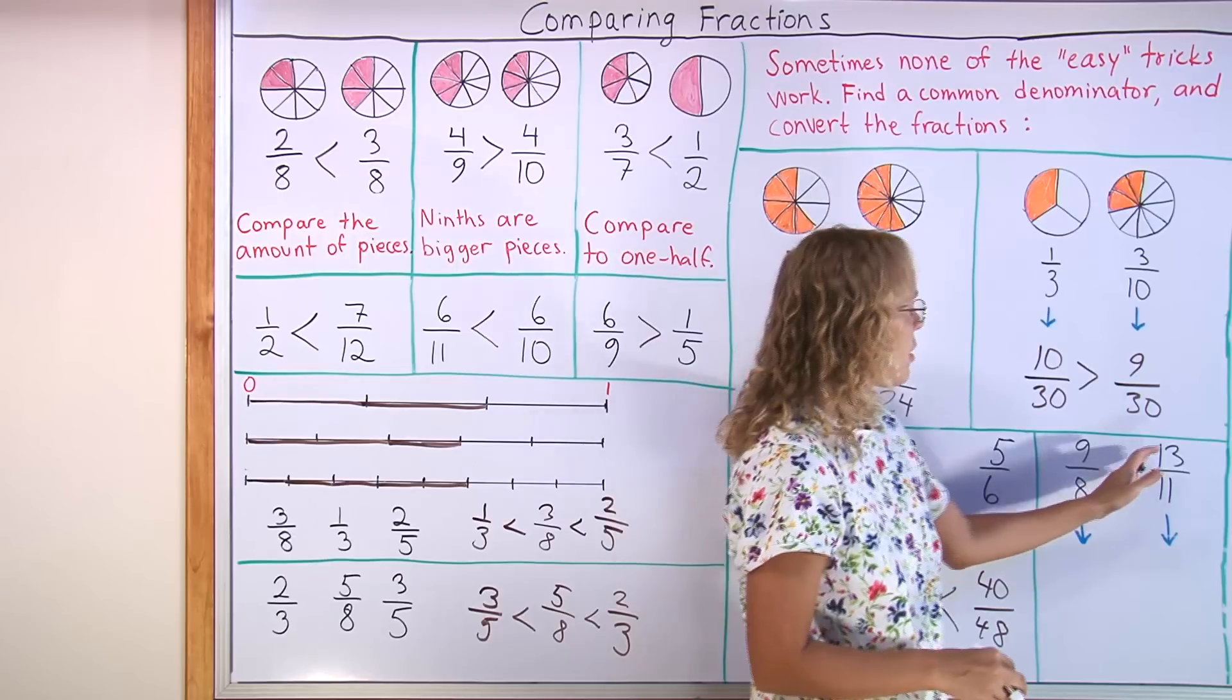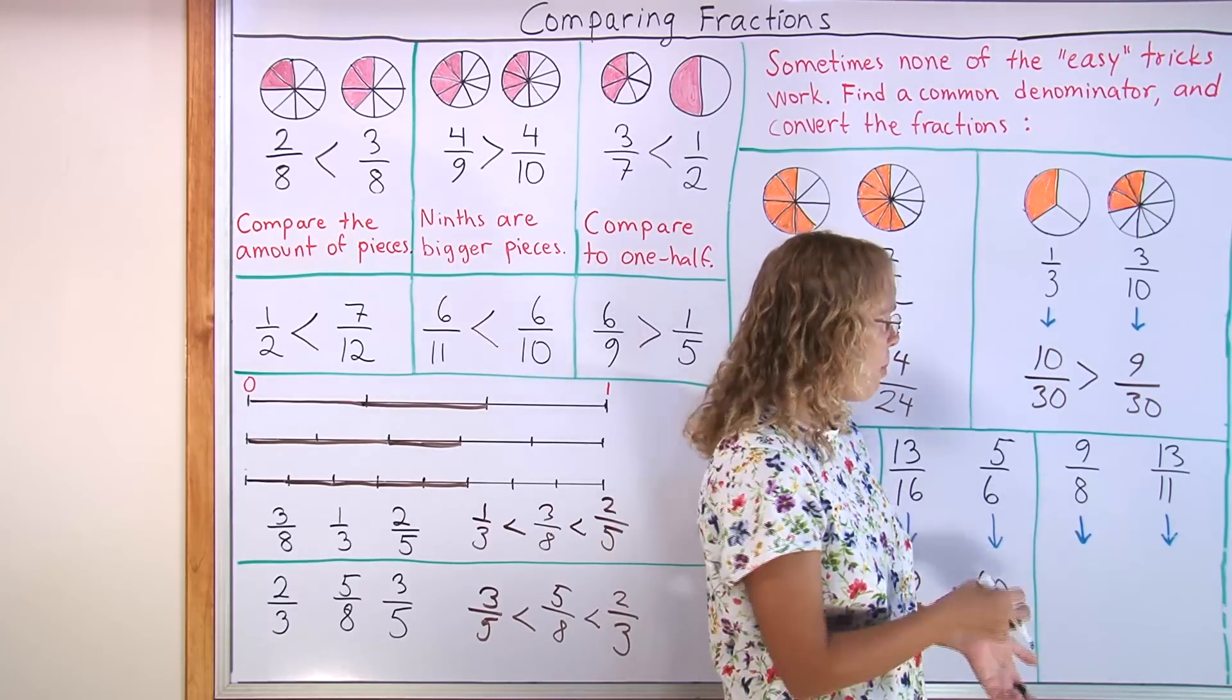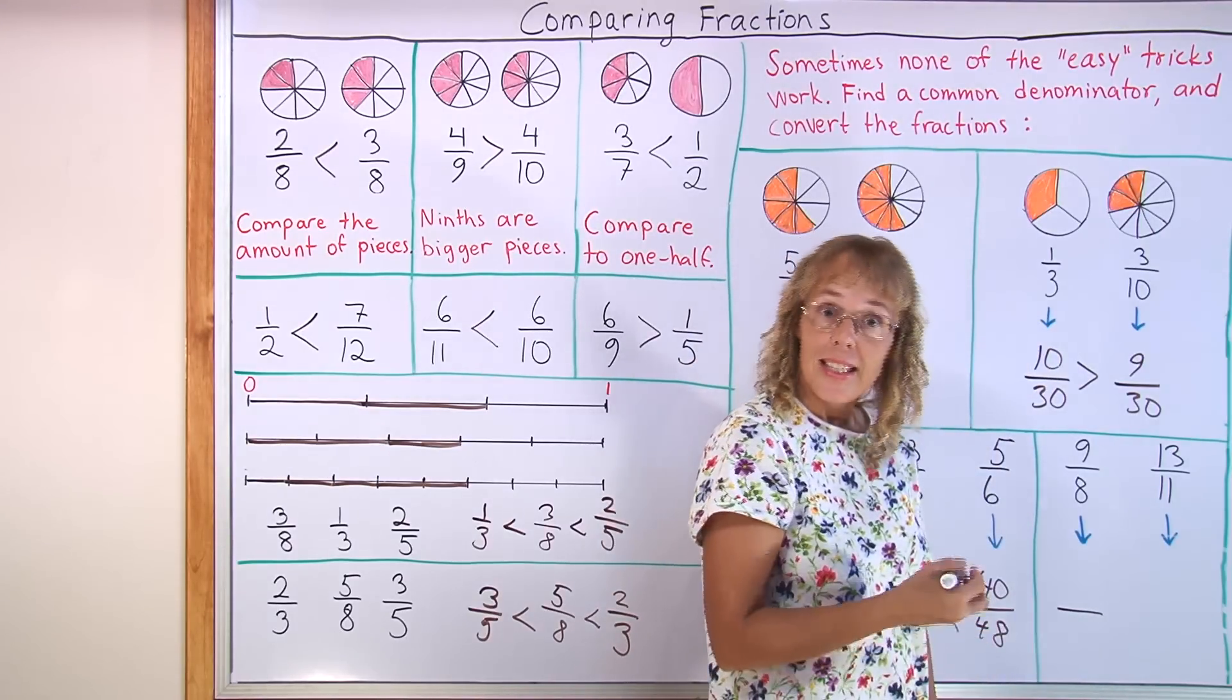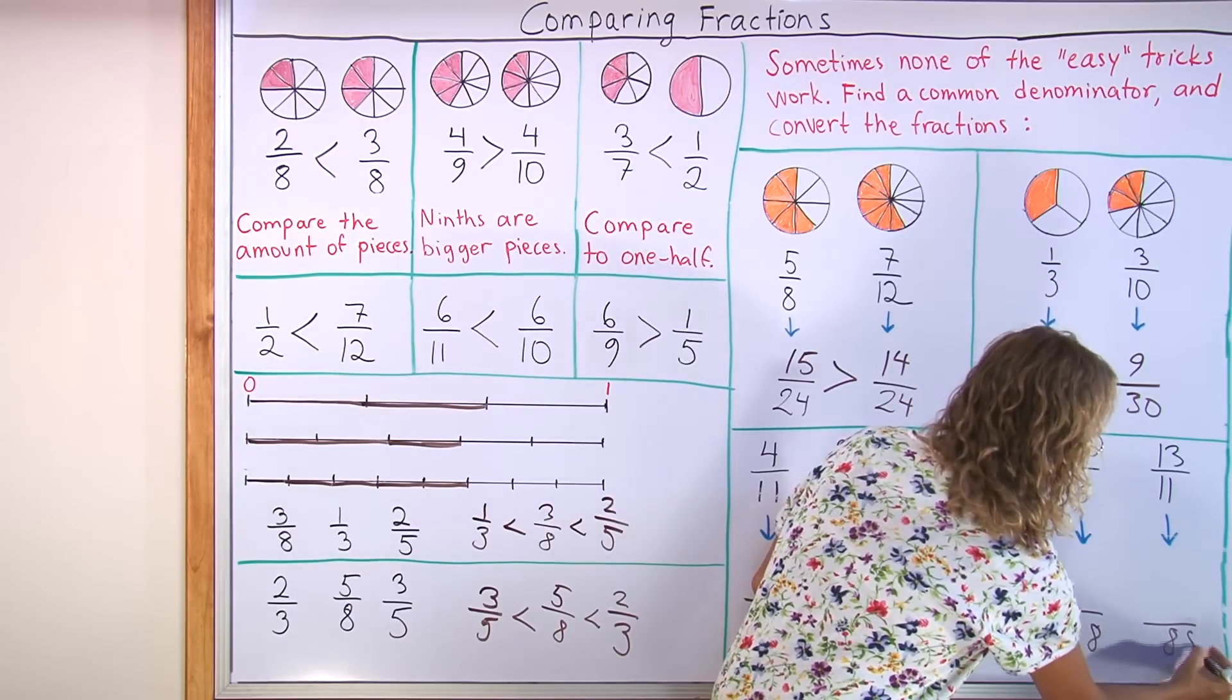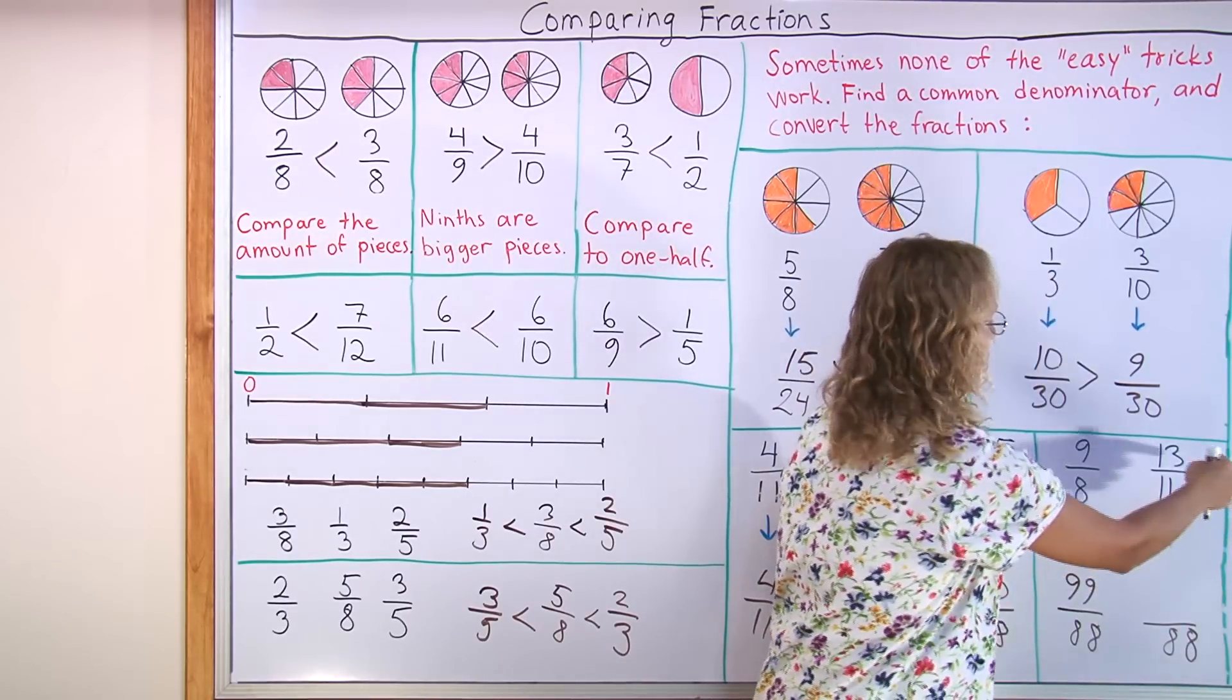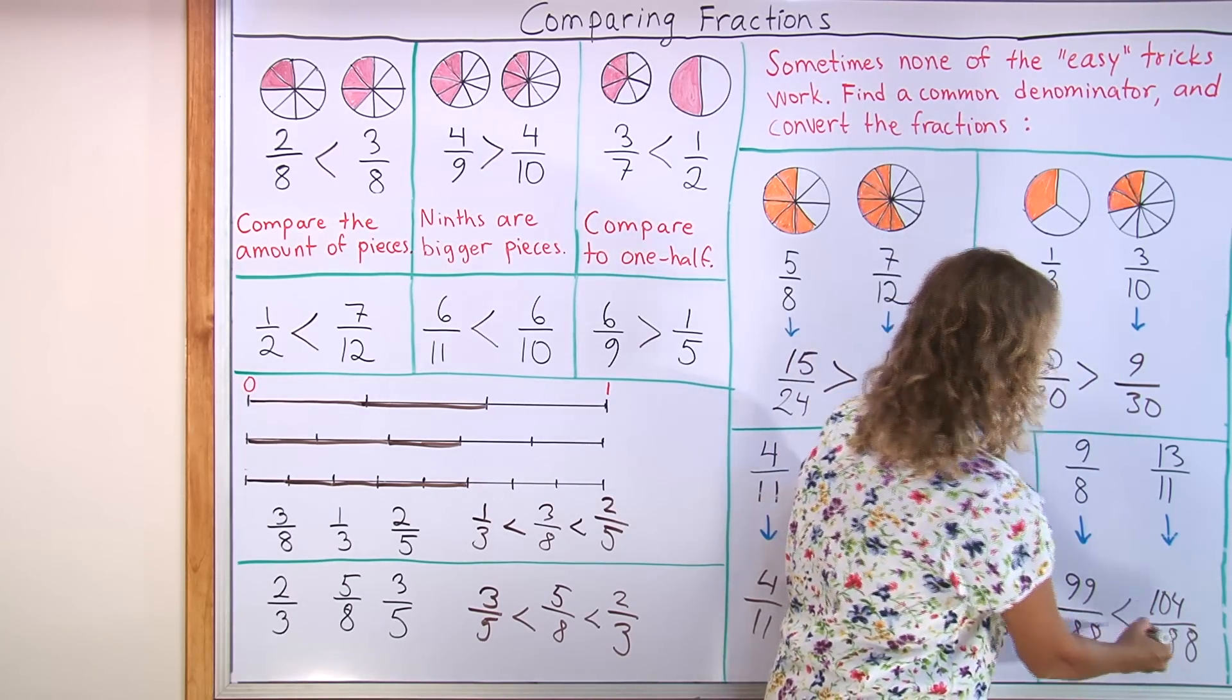And here, 9/8 and 13/11. Note that these are improper fractions. I could write them as mixed numbers but for comparing it it doesn't matter. I can just use the same method as I did here. I would now have to choose my denominator as 88. 8 times 11 is 88. So 8 times 11 and then 9 times 11. And here, 11 times 8 so 13 times 8 which is 80 plus 24. That fraction is more.